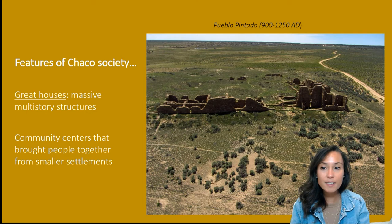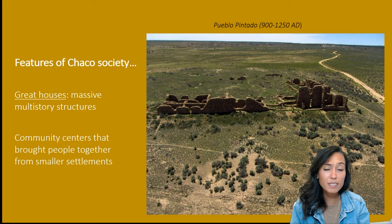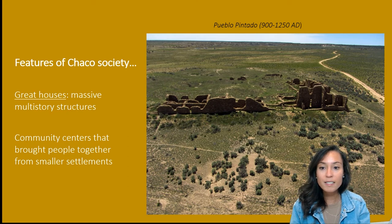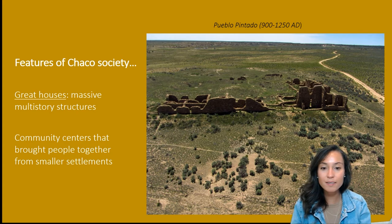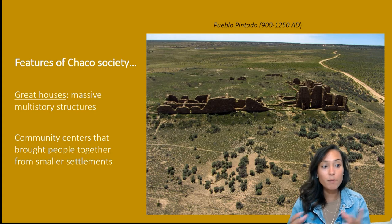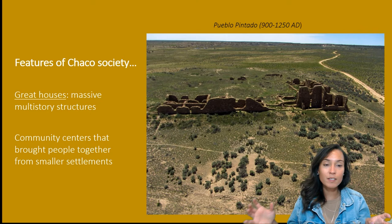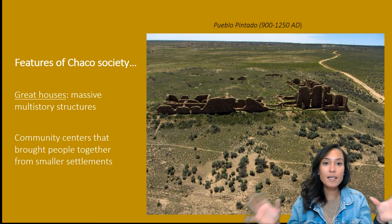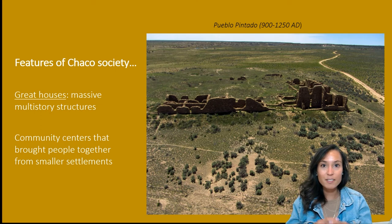One of these great house outliers is called Pueblo Pintado, about 16 miles east of Chaco. Based on the extent of roads and the presence of a similar layout at Pueblo Pintado, we can assume that this Pueblo was part of what is called the Chaco phenomenon — an emerging central complex of smaller sites linked together by the grand site at Chaco Canyon.